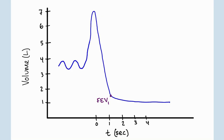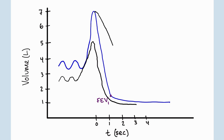On spirometry with restrictive disease we see decreased volume overall. You'll start with a smaller tidal volume so the curves are a little bit shallower. When you take a big deep breath in you won't be able to go quite as high, but the slope should be fairly normal because we're not dealing with obstruction here. Compare this to obstructive disease where you see a very different, flattened slope on expiration.